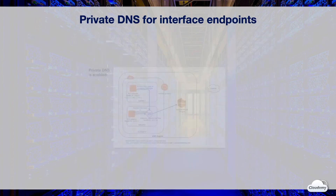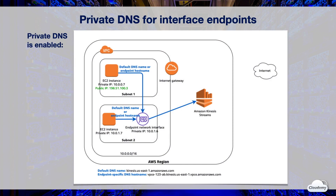Instances in subnet one can access Kinesis over public IP address space in the AWS Region using its default DNS name. When the private DNS for the interface endpoint is enabled, instances in either subnet can send requests to Kinesis through the interface endpoint using either the default DNS hostname or the endpoint-specific DNS hostname. If your existing applications make requests using the default DNS name, they can continue without any changes.